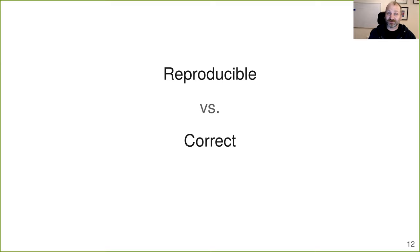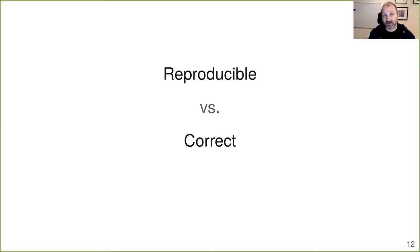Reproducible is not the same as correct. If there's a bug in your code, you run it again and you'll get exactly the same answer — but it'll be the same wrong answer. You hope that if the work is reproducible, it may be more likely to be correct, or if you share the code and data with other people, mistakes you might have made will be more quickly identified — like the example where I was using an old version of the data set. But there's no guarantee that it's correct.